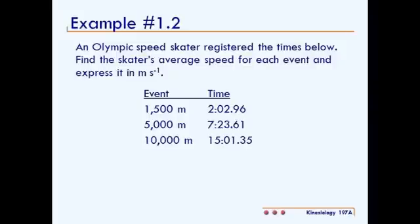The problem reads: an Olympic speed skater registered the times below. Find the skater's average speed for each event and express it in meters per second. So you're given some data, I'm going to write it on the screen now.